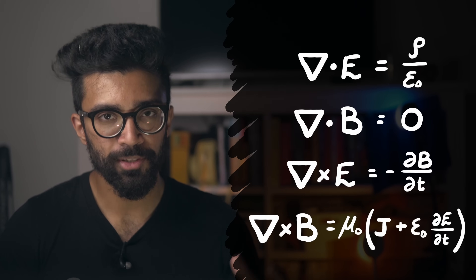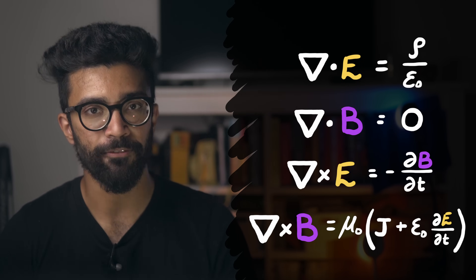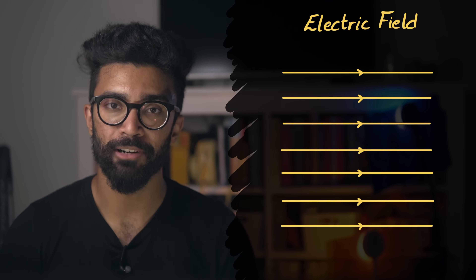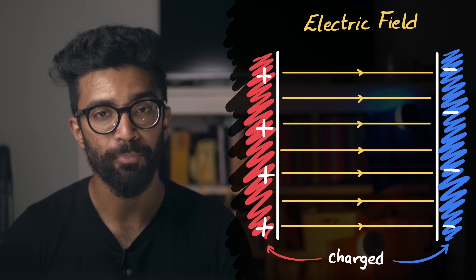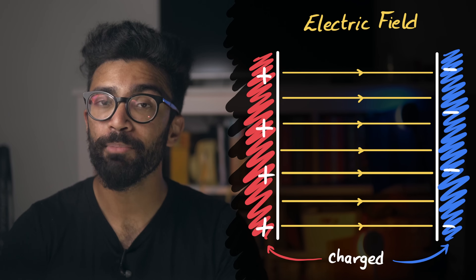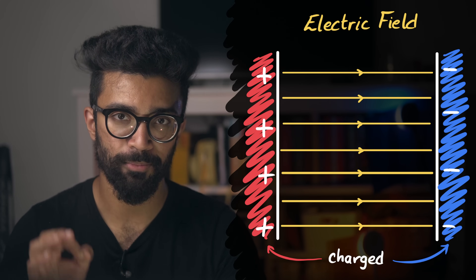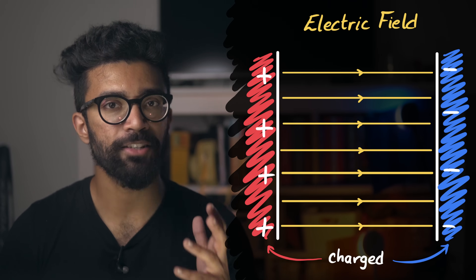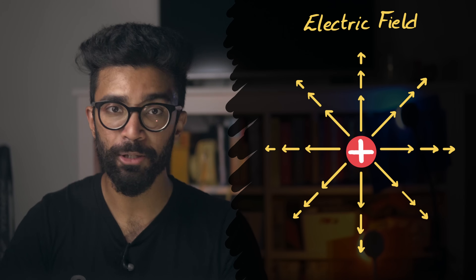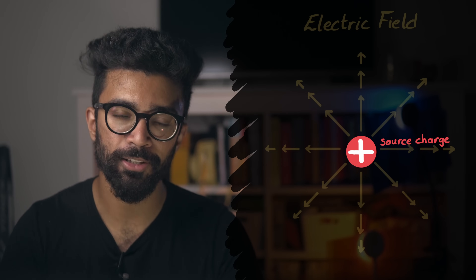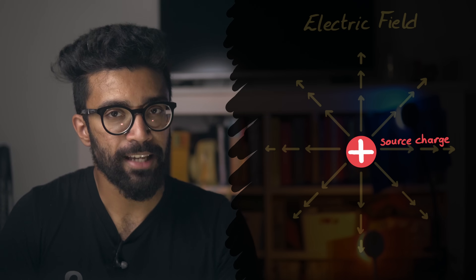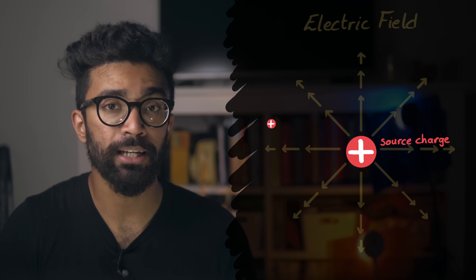Maxwell's equations describe how electric and magnetic fields behave in our universe. Electric fields are generated by charged objects, and we use these fields to describe what happens to other charged objects placed in the region of space where the field exists. The simplest example of this is looking at a couple of charged particles. Let's say we have a charged particle initially at this point in space, and it's positively charged. We can draw what its electric field looks like.